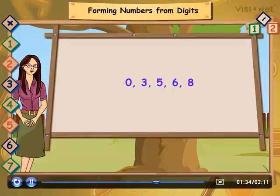0, 3, 5, 6, 8. So, to form the smallest number, we write the digits in ascending order. Like this.